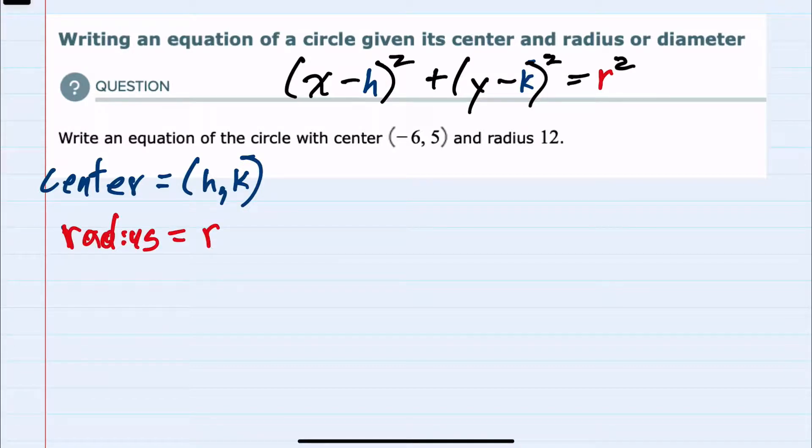So I can plug in the h and k and r that I'm given and have (x - h), where h is -6, squared, plus (y - k), where k is 5, squared, equals the radius is 12, so this would be 12 squared.